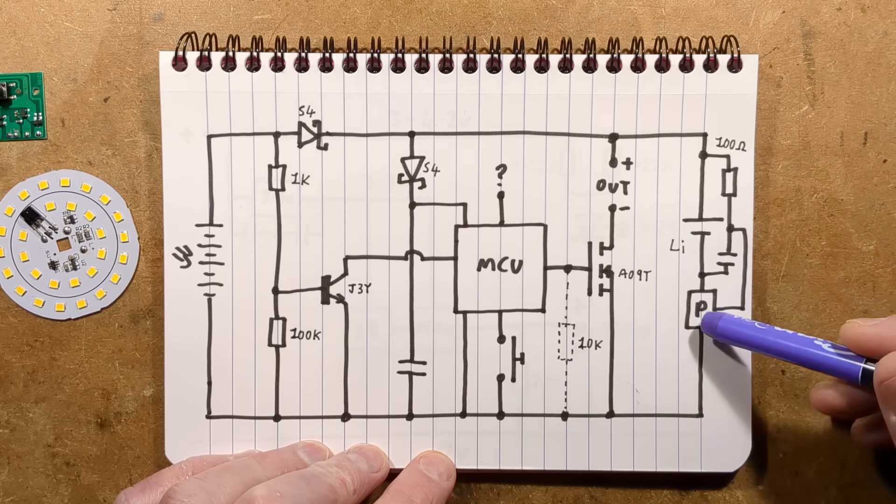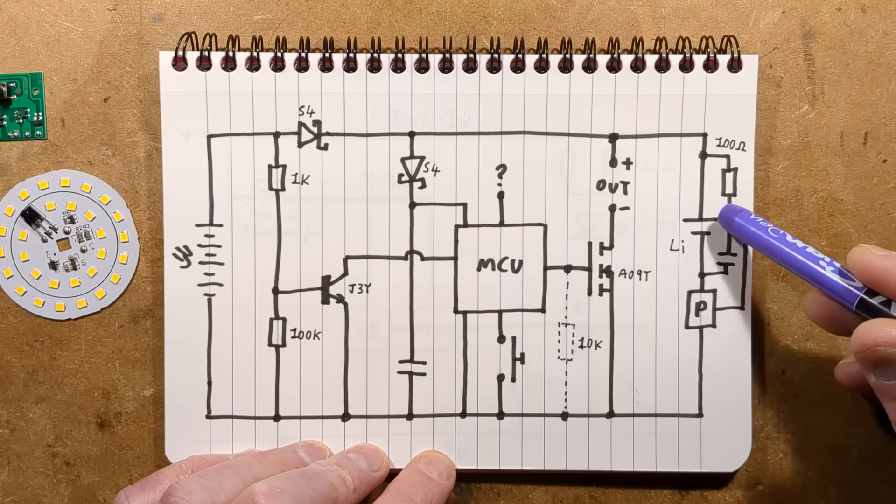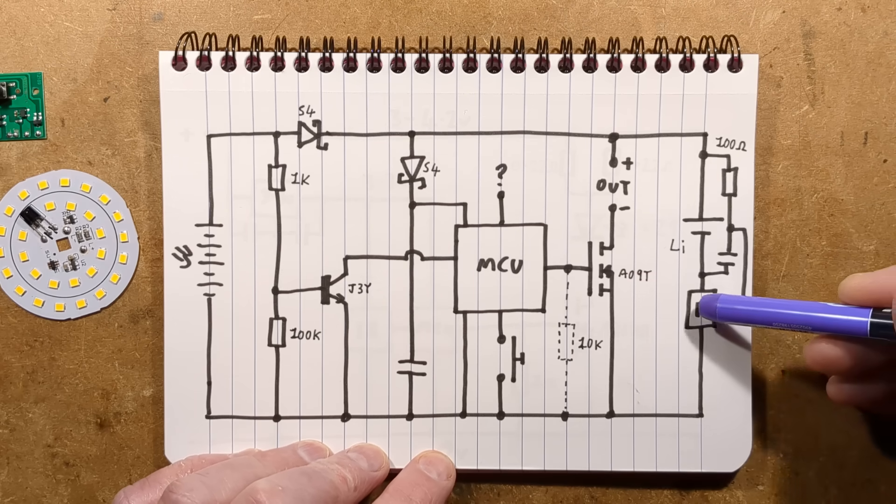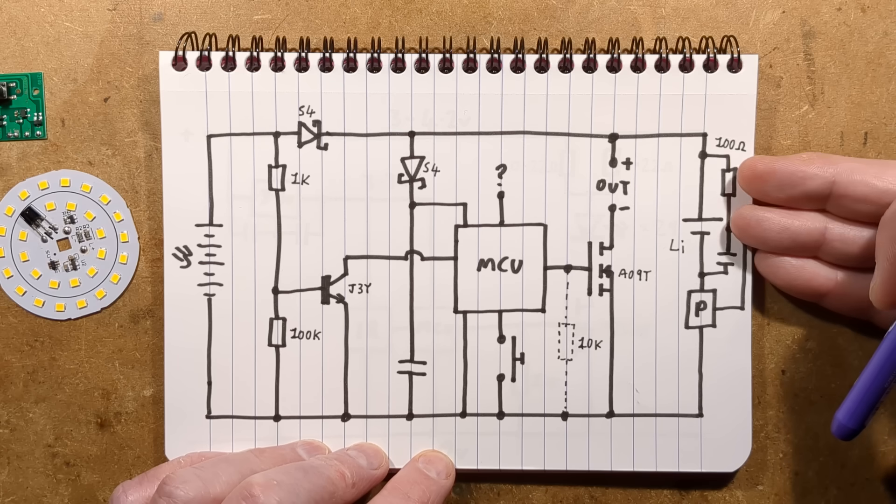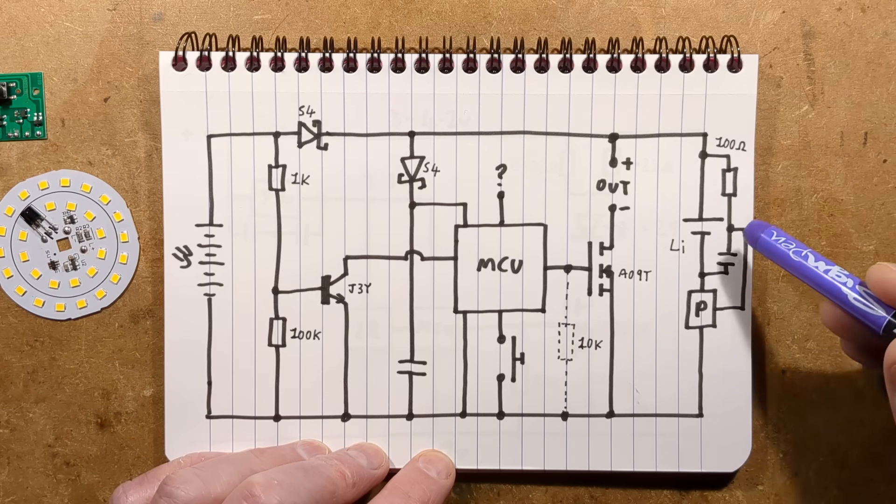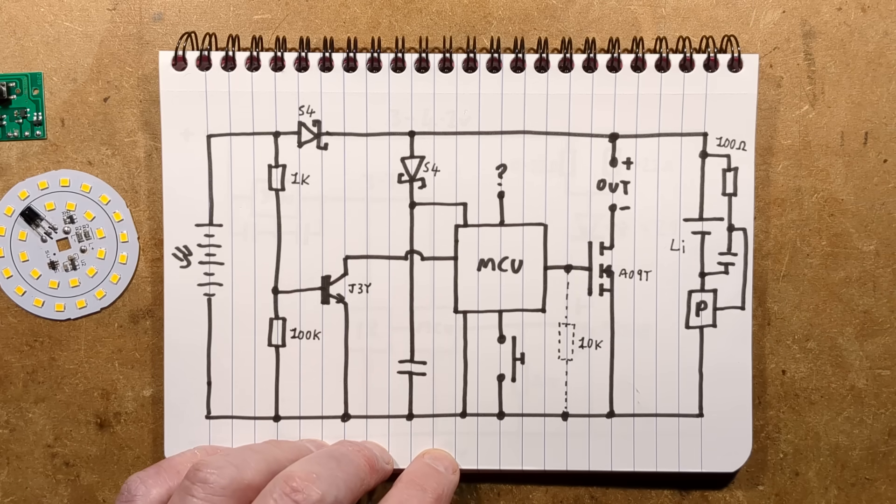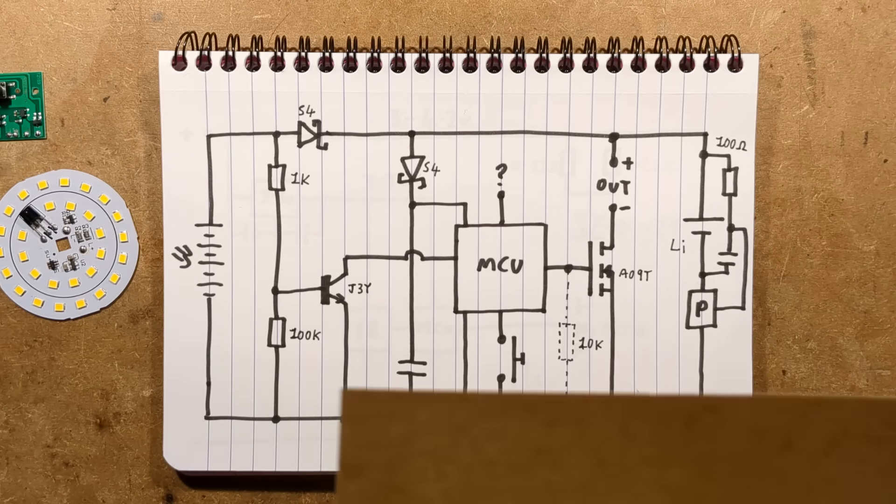The lithium cell has that protection chip with a little divider, 100 ohm and probably 100 nanofarad capacitor across the cell, tapped off to provide a signal to the protection chip. And it monitors for the voltage going above say 4.2 volts or below 3 volts probably. I'm not sure the exact specification for this.